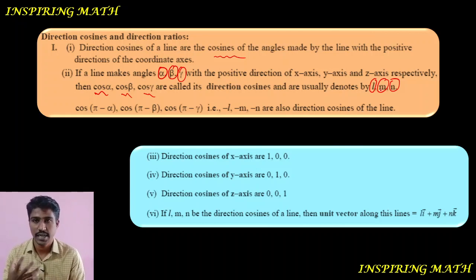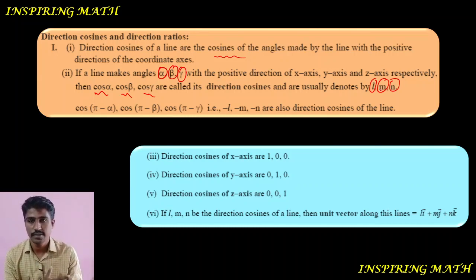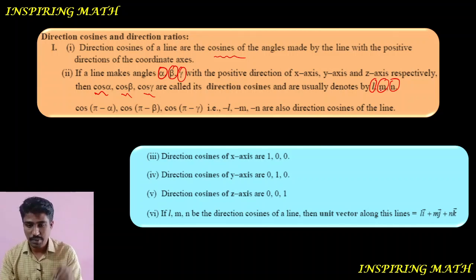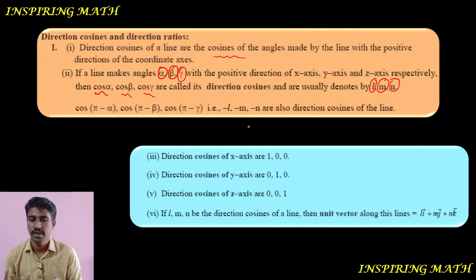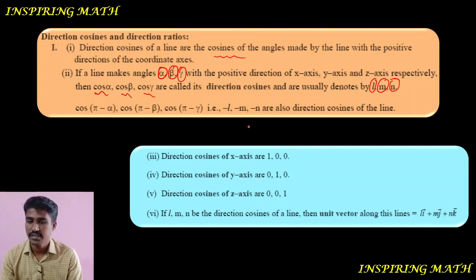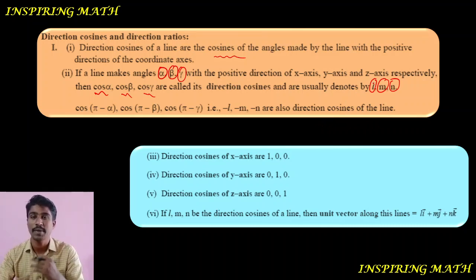So alpha is the angle made by the line with the positive direction of x-axis, beta is the angle made with the y-axis, and gamma is the angle made with the z-axis. Similarly, cos(π−α), cos(π−β), and cos(π−γ) are also direction cosines of the line, giving minus l, minus m, minus n. So one line has two sets of direction cosines — you choose the plus or minus option as appropriate.